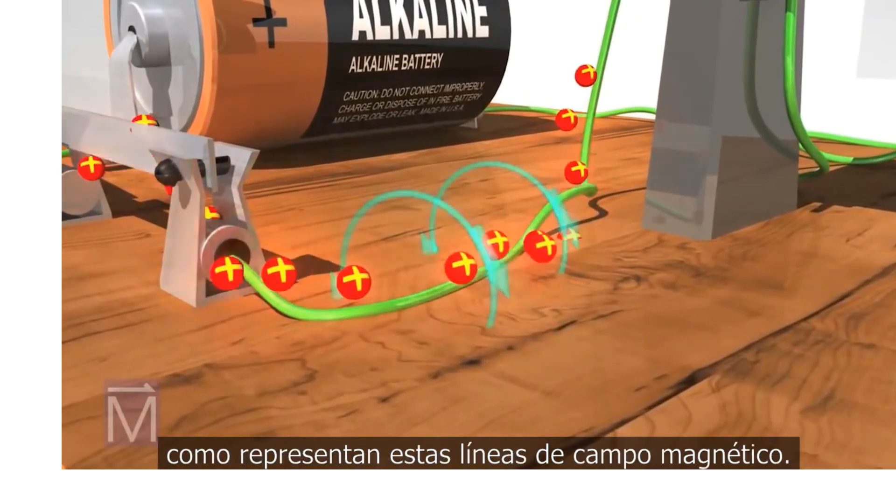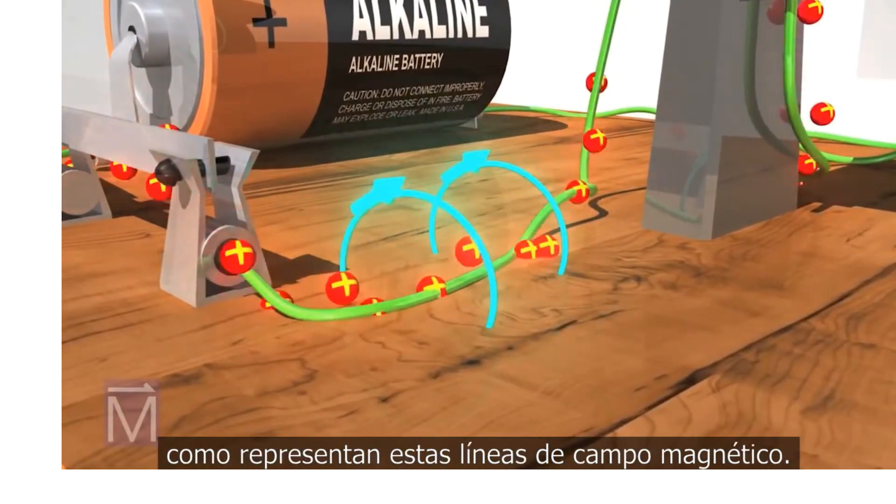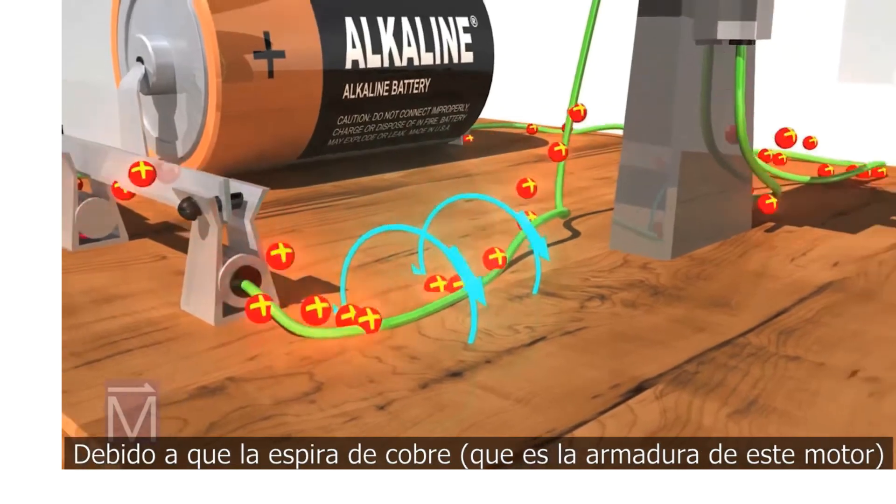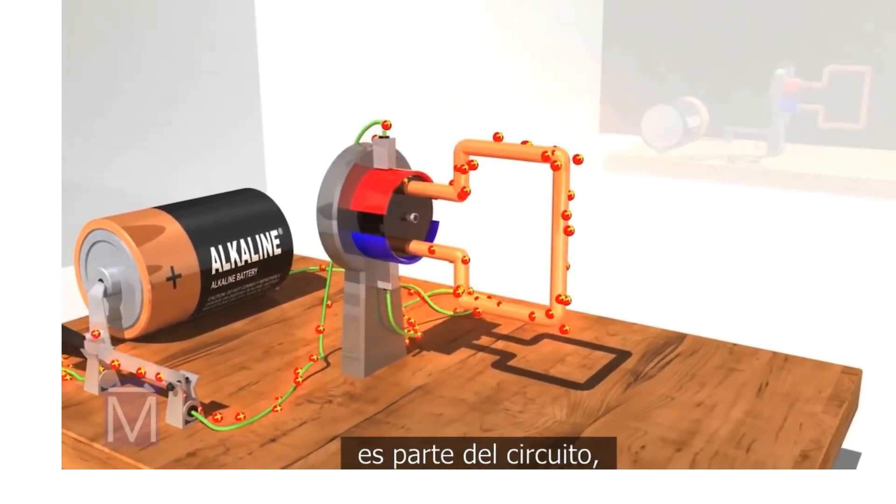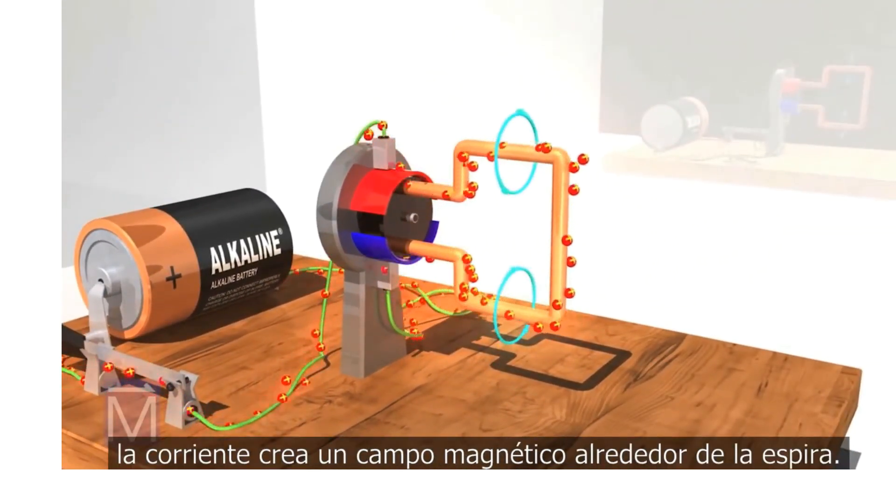as they move, as shown by these blue arrows. Because the copper coil, that is the armature, is part of the circuit, the current also creates a magnetic field around the coil.